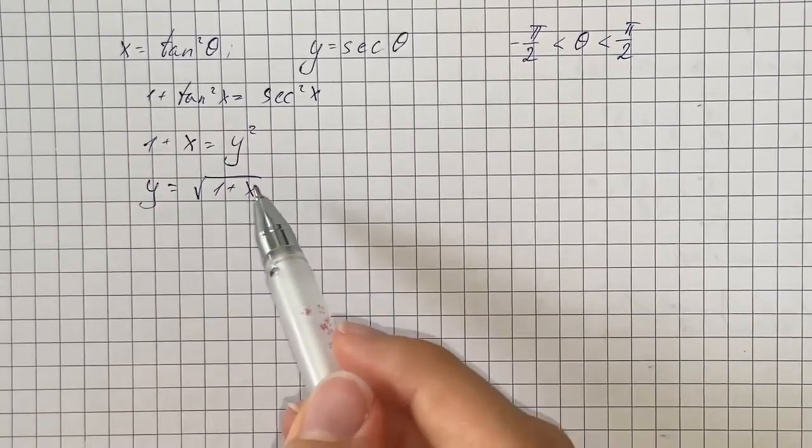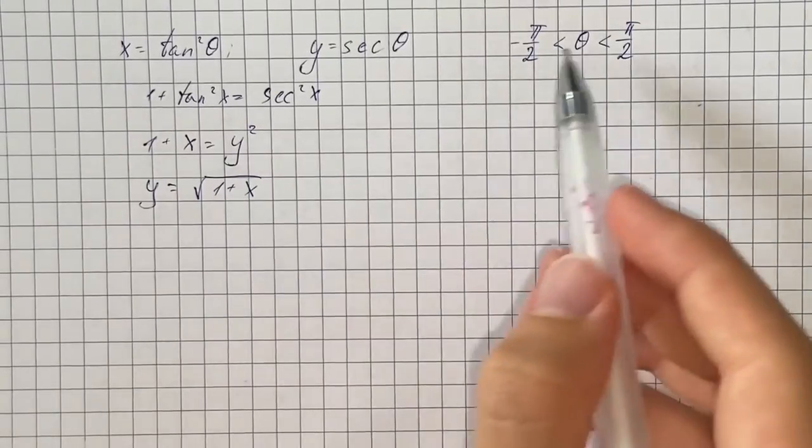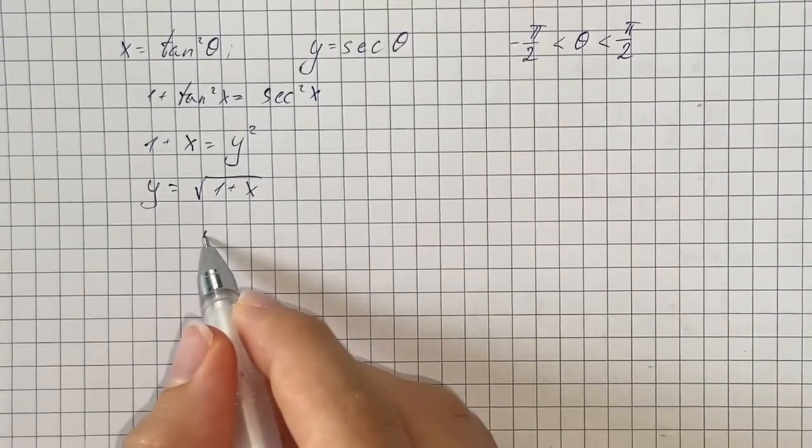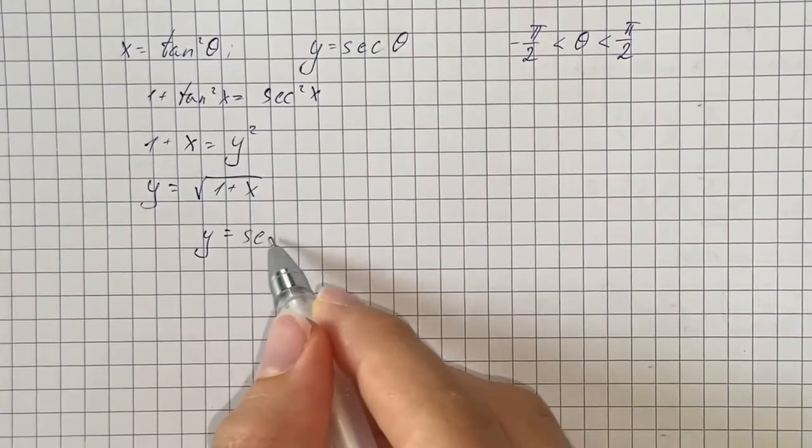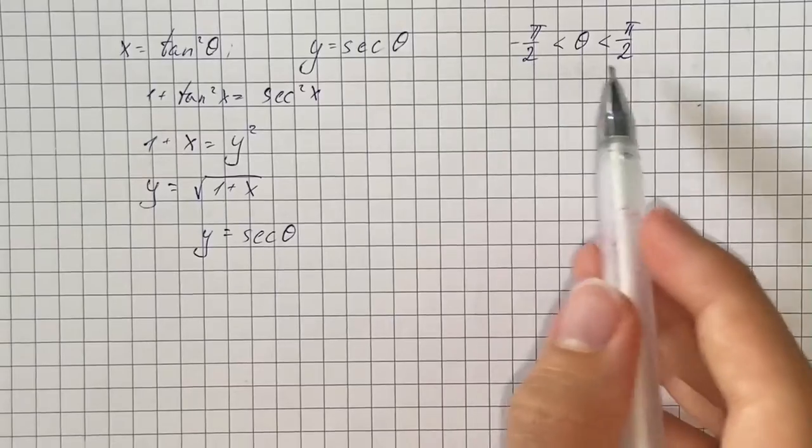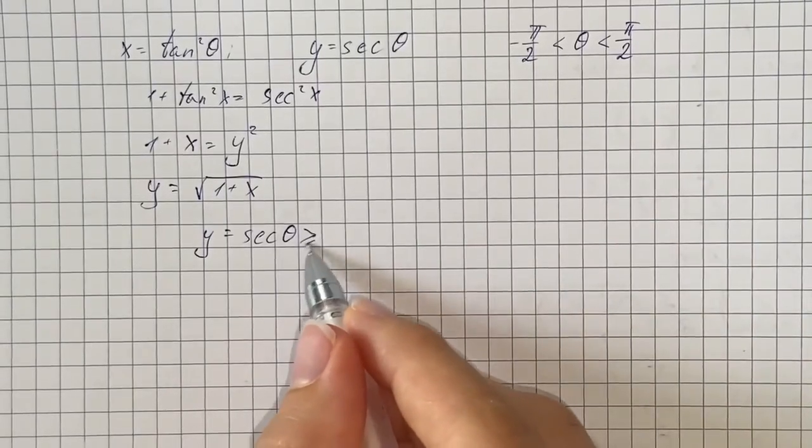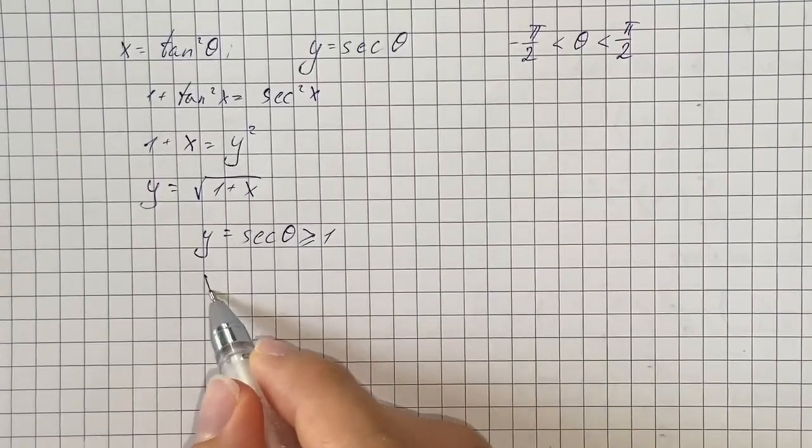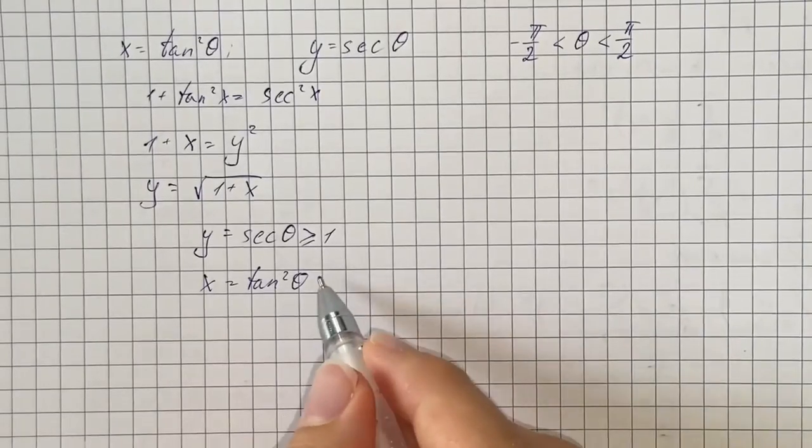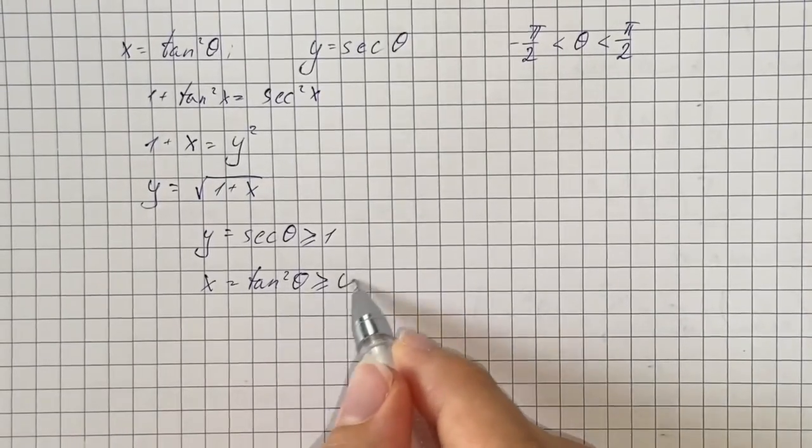We only choose a positive square root because in the given interval we have that y, which is secant of theta for the given interval, is greater than or equal to 1, and x, which is tangent squared of theta, is greater than or equal to 0.